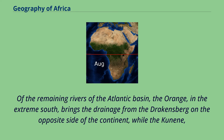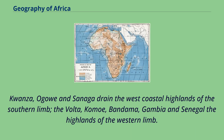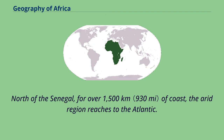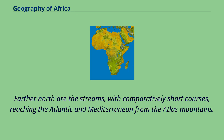Of the remaining rivers of the Atlantic basin, the Orange, in the extreme south, brings the drainage from the Drakensberg on the opposite side of the continent, while the Kunene, Kwanza, Ogooué and Sanaga drain the west coastal highlands of the southern limb; the Volta, Comoé, Bandama, Gambia and Senegal drain the highlands of the western limb. North of the Senegal, for over 1,500 kilometers of coast, the arid region reaches to the Atlantic. Farther north are streams, with comparatively short courses, reaching the Atlantic and Mediterranean from the Atlas Mountains.